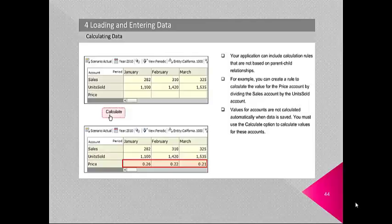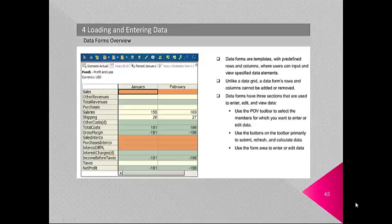Your application can include calculation rules not based on parent-child relationships. For example, you can create a rule to calculate the value of a Price account by dividing the Sales account by the Units Sold account. Values for such accounts are not calculated automatically; after data is saved, you must use the Calculate option. Data forms are templates with predefined rows and columns where users can input and view specified data elements. Unlike a data grid, a data form's rows and columns cannot be added or removed. Data forms have three sections: the POV toolbar to select members, toolbar buttons to submit, refresh and calculate data, and the form area to enter or edit data.